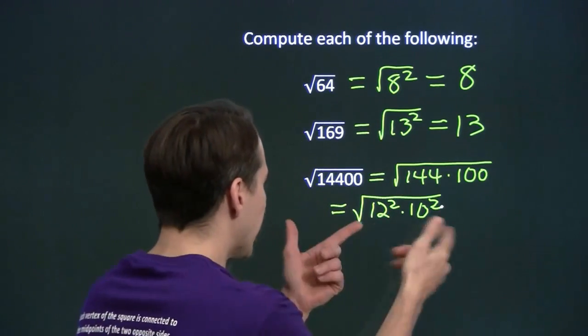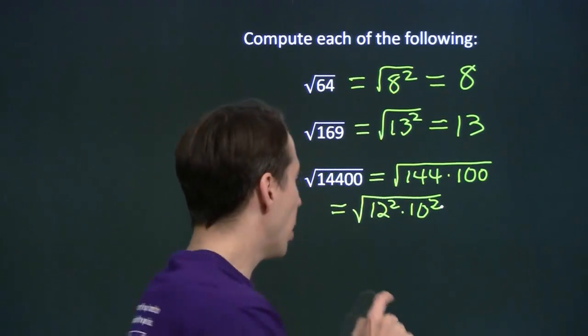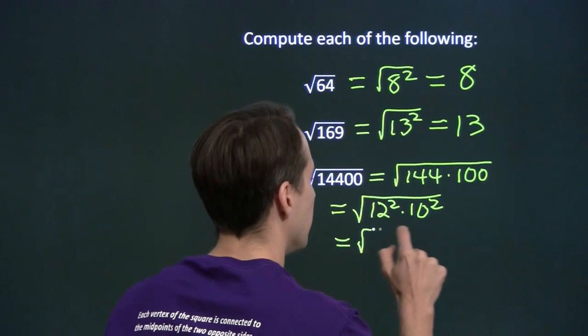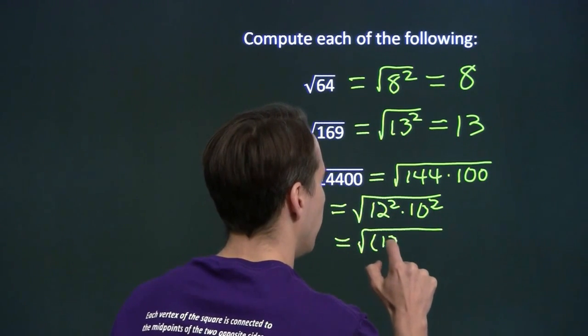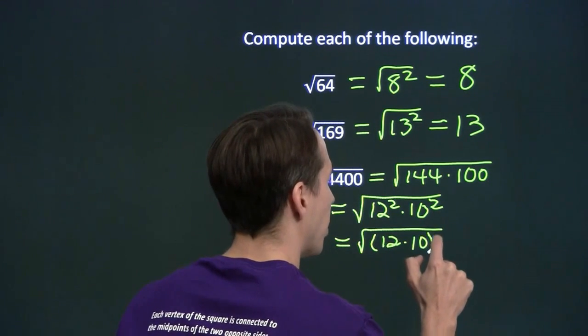That's just 12 squared times 10 squared. And there's that exponent rule. I can combine these. I've got a product of squares. That's the square of a product. I can write this as the square root of 12 times 10, this product, squared.